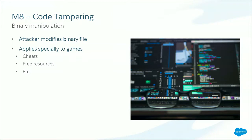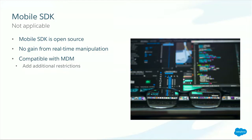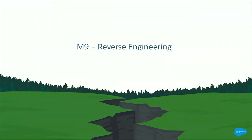Number eight is code tampering — modifying the client-side binary, memory manipulation, and similar attacks more common on desktop but applicable to mobile. In reality, this is mostly relevant to video games where players try to cheat or collect coins. For the mobile SDK it's not really applicable, because all checks are done server-side. Even if you manipulate requests or memory, any modified request still goes through our server-side authorization checks with no gain to the attacker.